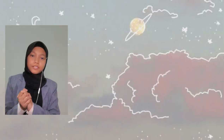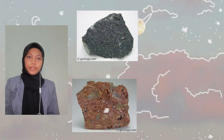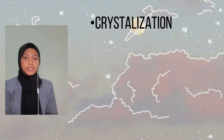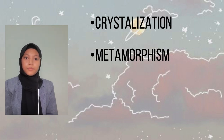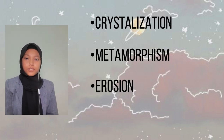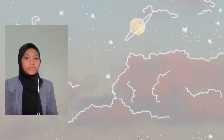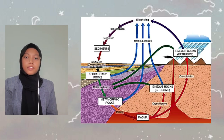Moving on to the process of rock formation. The three main rock types are igneous, metamorphic and sedimentary. The three processes that change one rock to another are crystallization, metamorphism, and erosion and sedimentation. Any rock can transform into any other by passing through one or more of these processes, creating the rock cycle.